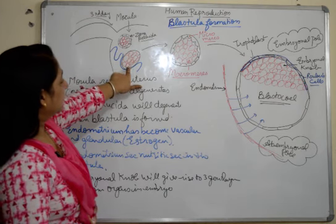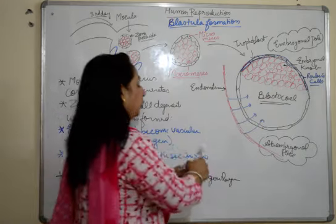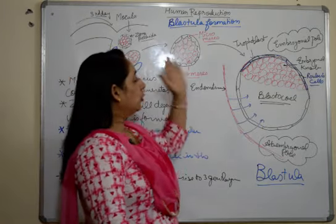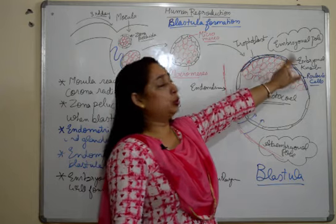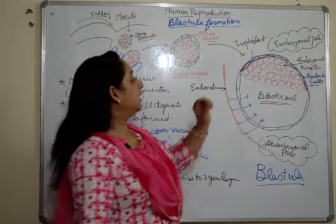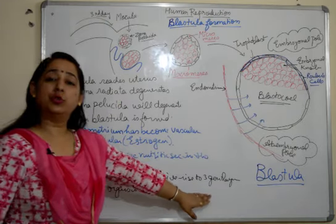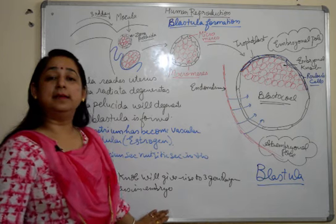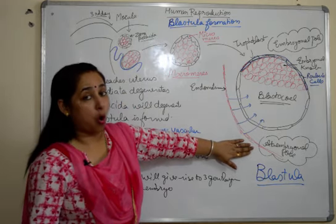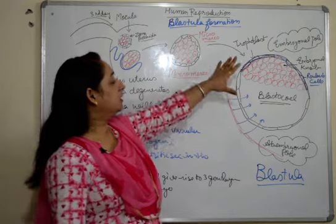So what have we discussed: the morula is placed close to the endometrium and adjusts itself to the endometrium, and herein the changes take place in the morula to convert it into blastula. The micromeres form the trophoblast, macromeres adjust towards one pole to form the embryonal knob, the cavity is filled with nutritive fluid known as the blastocoele, the cells placed close to the embryonal knob are Rauber's cells, the pole of the embryonal knob is the embryonal pole and the other is the ab-embryonal pole. The embryonal pole will finally give rise to the three germ layers which form the organs in the embryo. This completes blastula formation.